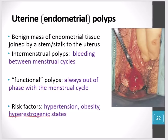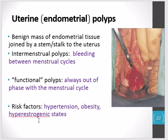Uterine or endometrial polyps are benign masses of endometrial tissue joined by a stem or stalk to the uterus that can bleed. Intermenstrual polyps cause bleeding between menstrual cycles. Functional polyps are always out of phase with the menstrual cycle. Risk factors include hypertension, obesity, and hyperestrogenic states — periods of excessively increased estrogen levels.